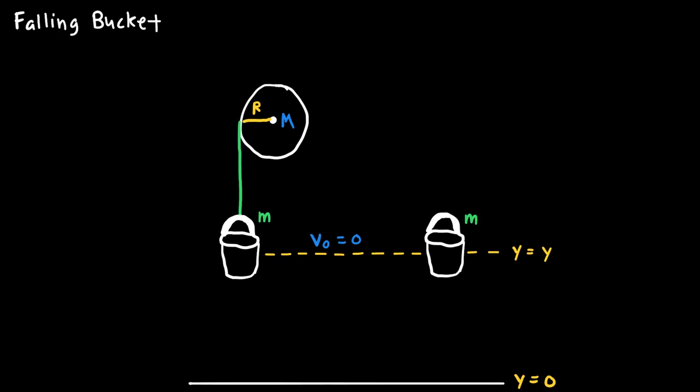I'd like to study the motion of the objects by figuring out how much time it takes to go from a height y to the ground. The bucket on the right is only affected by gravity, but the bucket on the left will be affected not only by gravity but by this upward tension and by the rotation of the pulley.